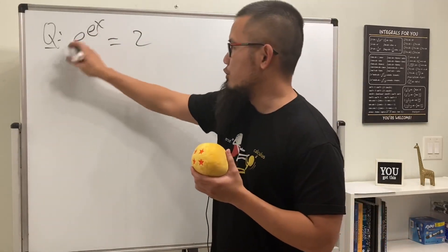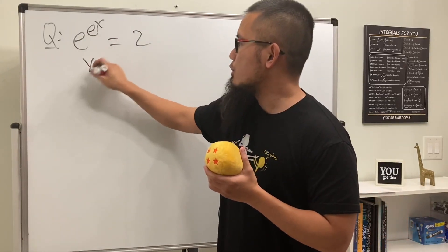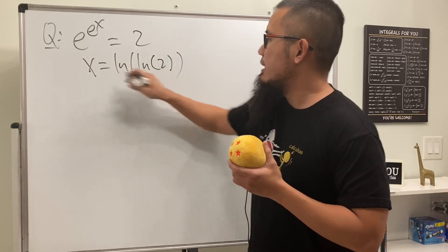Well, this right here is not bad at all, because we can just take the natural log twice. So x is just equal to ln of ln of 2, and that's it, done, diyo.